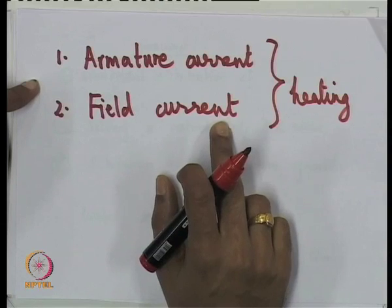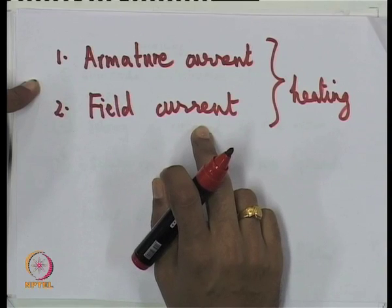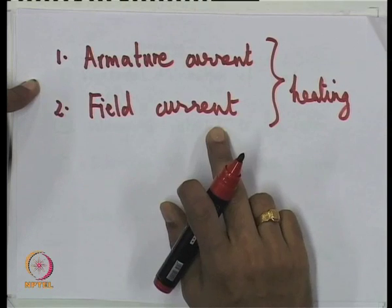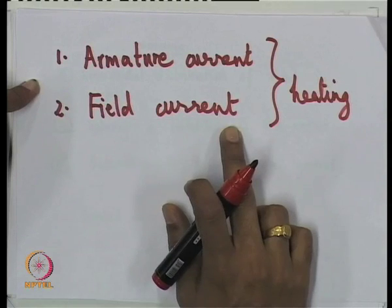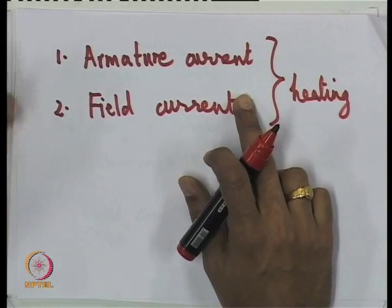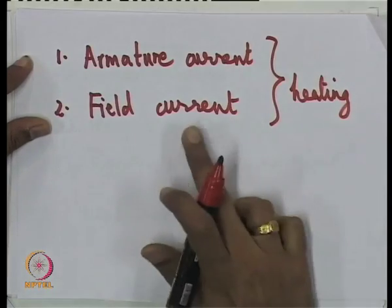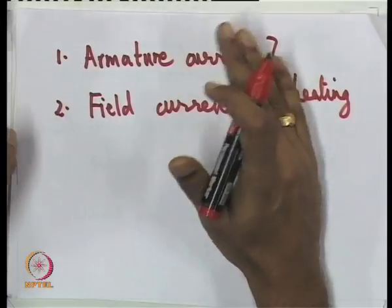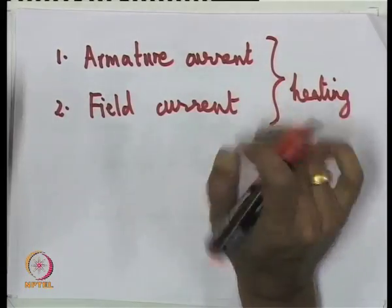In a synchronous machine, by changing the field current you can change the reactive power, but you cannot keep increasing it — after a point the field current hits its limit. So even with very low real power, you cannot have Q very high because that requires very high field current. Both P and Q are limited by these constraints, and you must find the safe operating region for the machine.